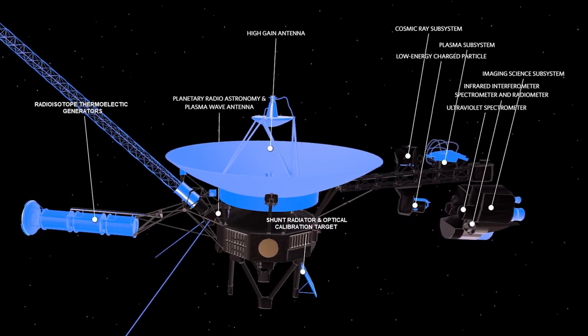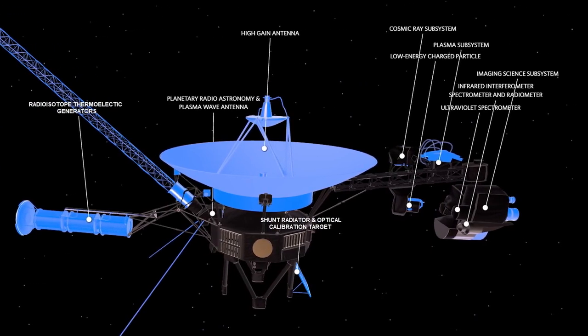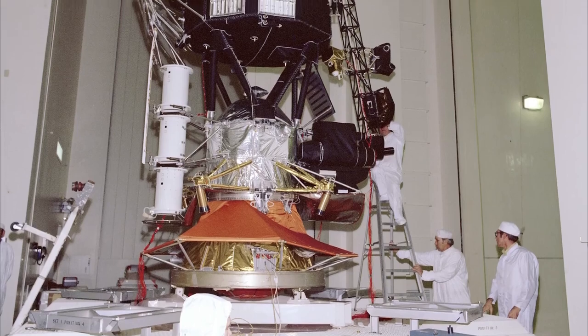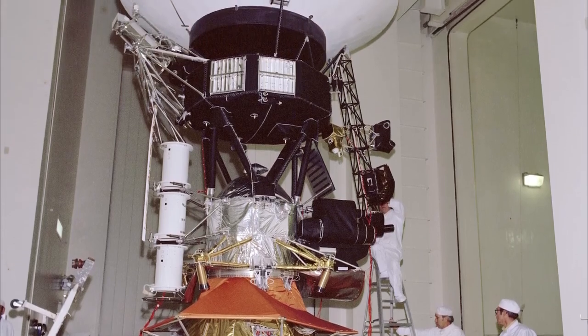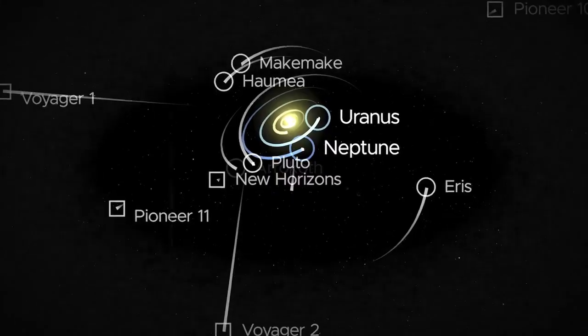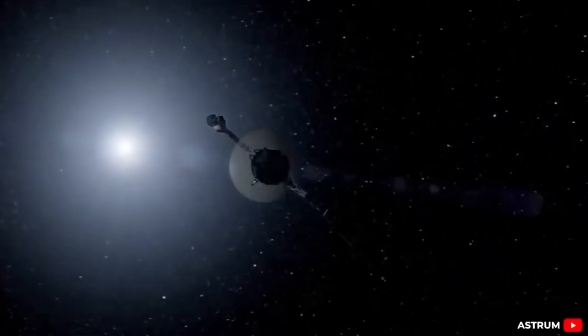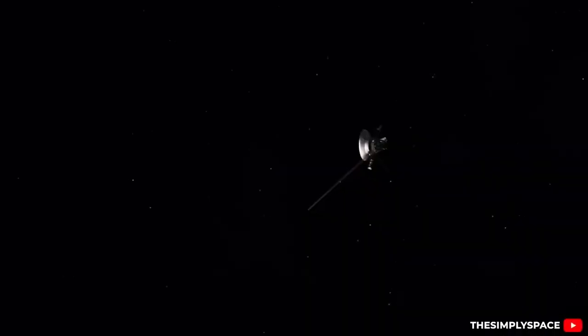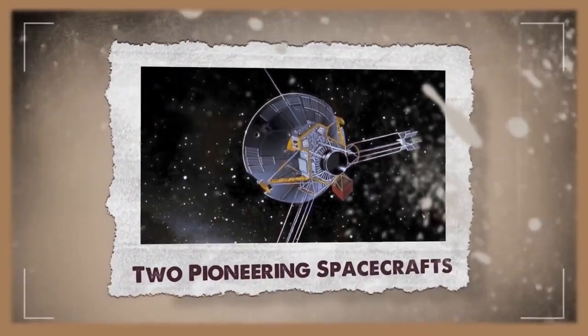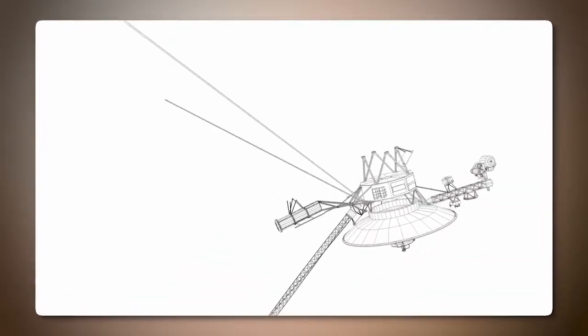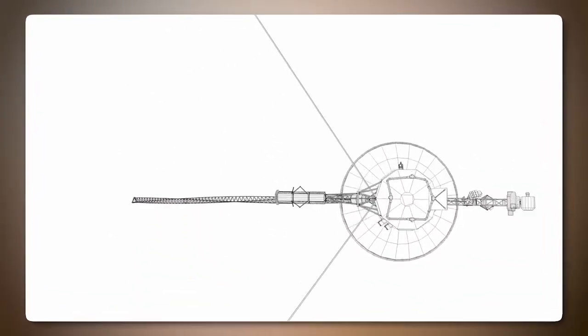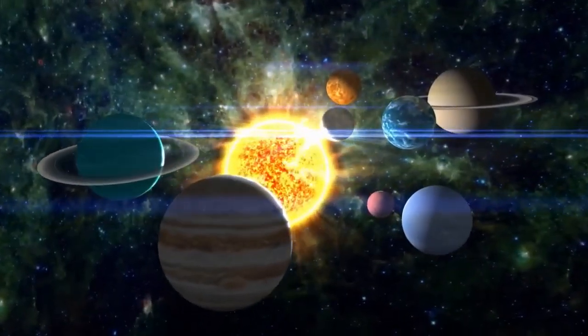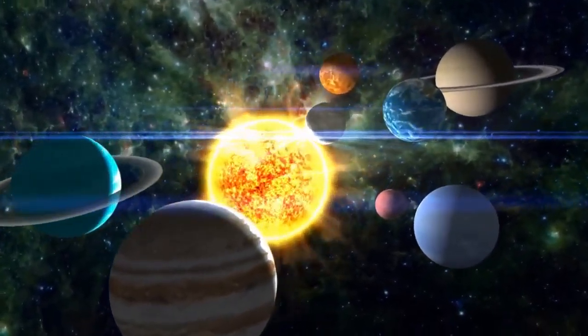Unfortunately, current spacecraft won't provide answers. NASA's New Horizons spacecraft, though fast, will run out of power in the 2030s, over a billion miles short of the heliopause. This limitation has sparked calls for a follow-up interstellar mission, a multigenerational effort to explore the farthest reaches of the solar system and beyond. With data from only two points, we cannot fully grasp the heliosphere's structure. More data is essential.